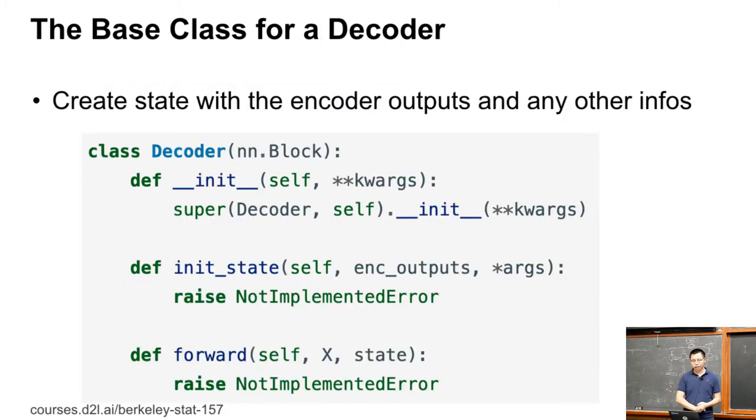The difference is for the decoder. The decoder has an additional function method called init_state. It takes the encoder's outputs, any output from the encoder, and with some additional things, like we just call star args. Any additional information you want to pass to the decoder, which will return a state, will be used for the forward pass of the decoder.